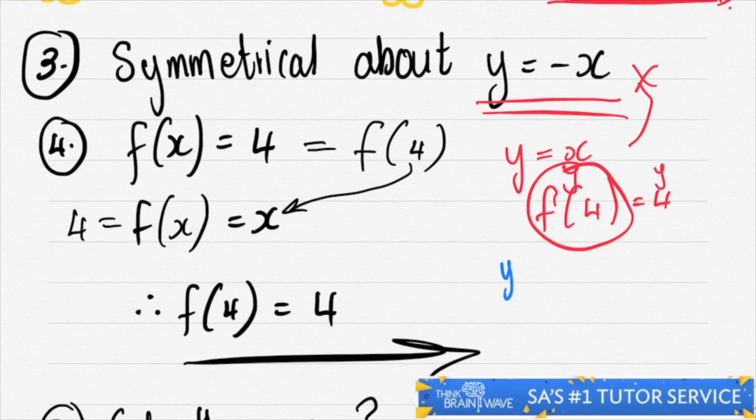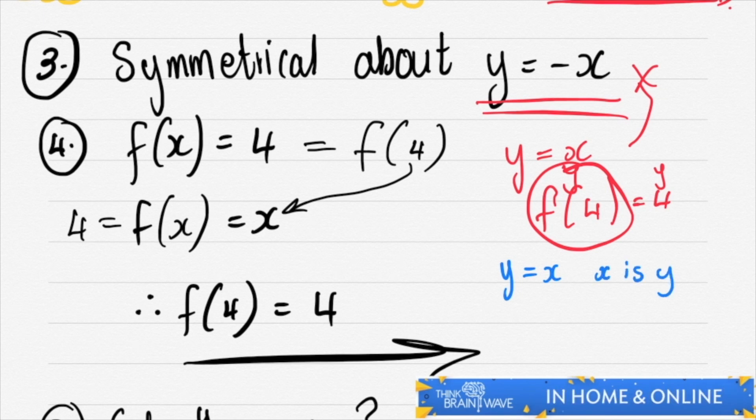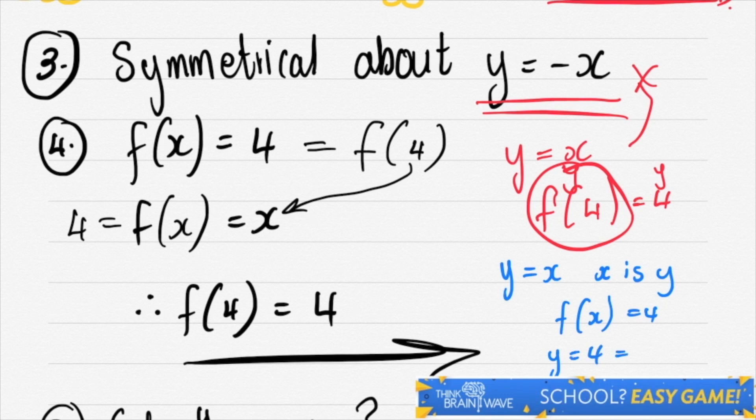Because y is equal to x, x is y. So when we have function of x is equal to 4, we understand that we say y is equal to 4, which is also equal to x.